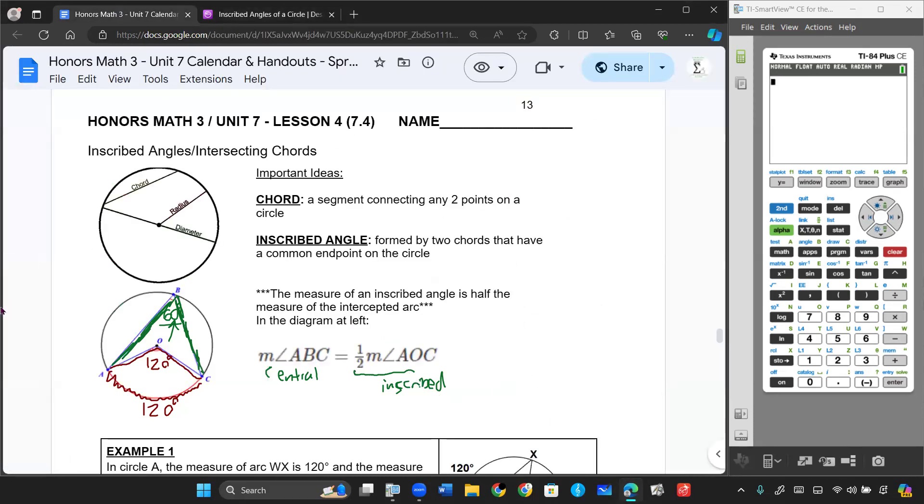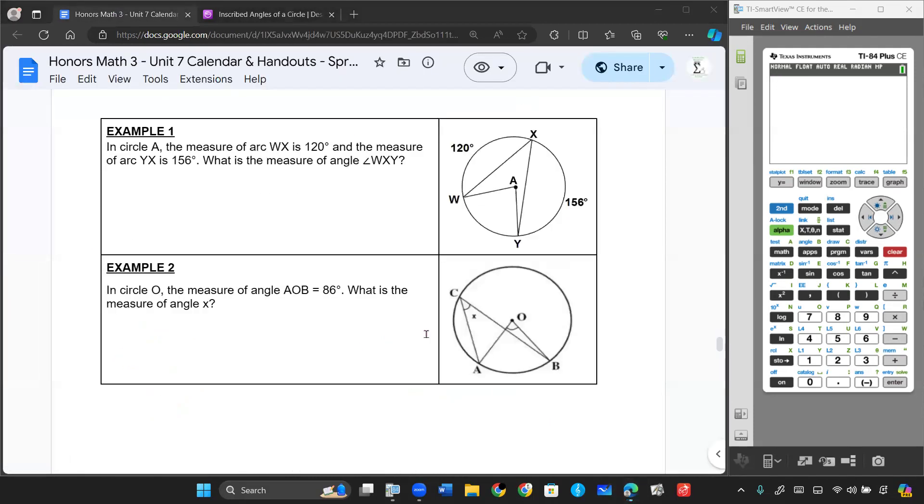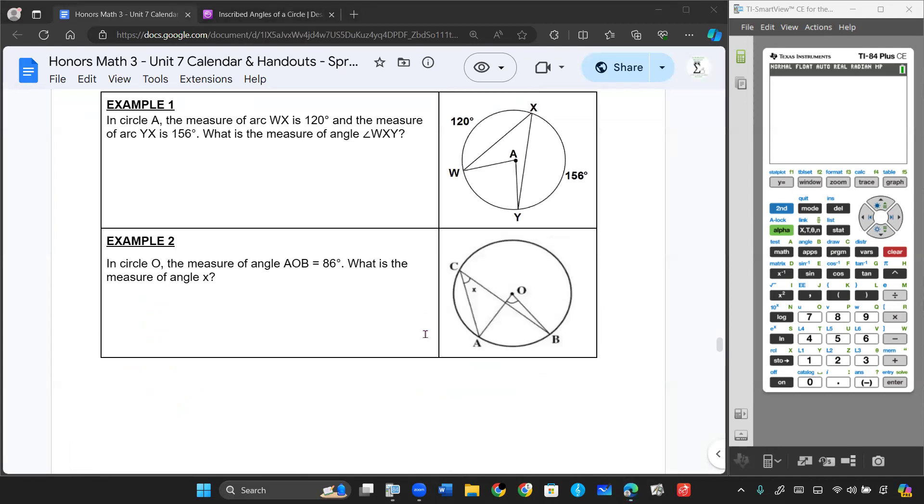Let's look at a couple questions related to this. On this first example, we have a circle with a couple arcs drawn around it. And we want to know in this problem, if we have this arc as 120, this is arc WX, and we have this other arc, XY 156, what is the measure of angle WXY?